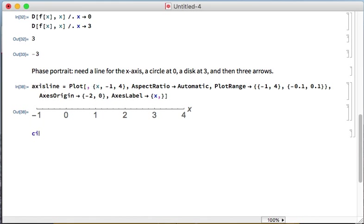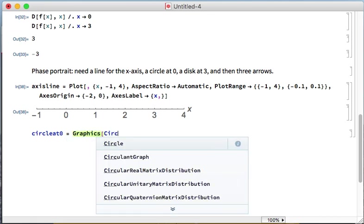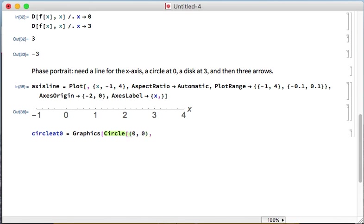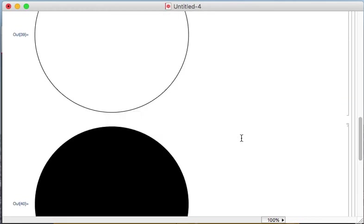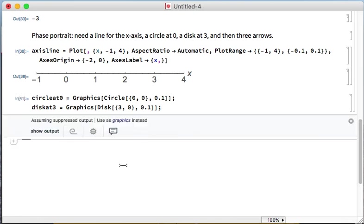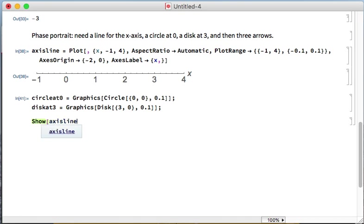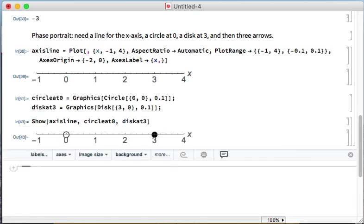The next thing I want to do is circle at 0. I happen to know that this is a graphics command, and that I need the command circle. Then I tell it the location of the circle, and then the radius of the circle. And then I want a disk at 3. So it's another graphic, and it's going to be a disk at 3, 0, and again a radius of 0.1. Let me take away these semicolons so that you can see the output. I'm going to put the semicolons back because those are huge. They're not going to be huge when I show them on my axes. Let me show these graphics items together. There's something a little off about exactly where my labels are, but this is great. I've got my unstable fixed point here and my stable one here.